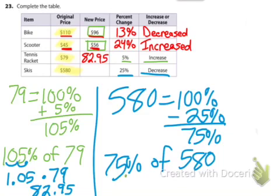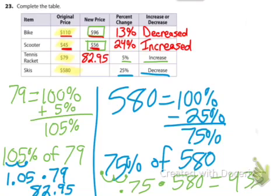We need to change 75% to a decimal by moving the decimal point twice. So we get 0.75 times 580. 0.75 times 580 gives us 435.